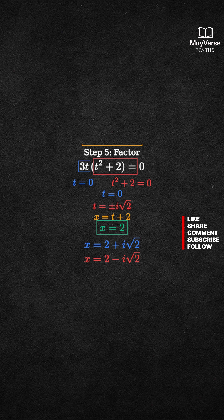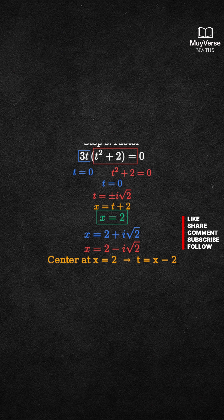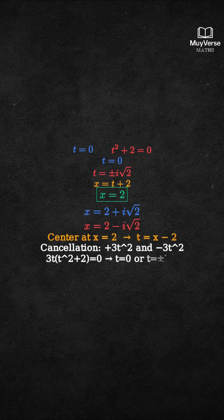Quick visual cue. Center at 2, so the shifts become t plus 1, t, and t minus 1. The quadratic parts cancel, leaving 3t cubed plus 6t. Factor to 3t times t squared plus 2 and solve. Shift back by 2. Done.